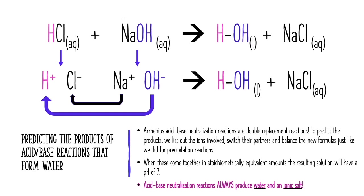When predicting the products of acid-base reactions that form water, these are going to be double replacement reactions that occur between Arrhenius acids and bases. To produce the products, all we need to do is list out the ions involved, switch their partners, and balance the new formulas using the charges on each ion, just like we did for precipitation reactions.